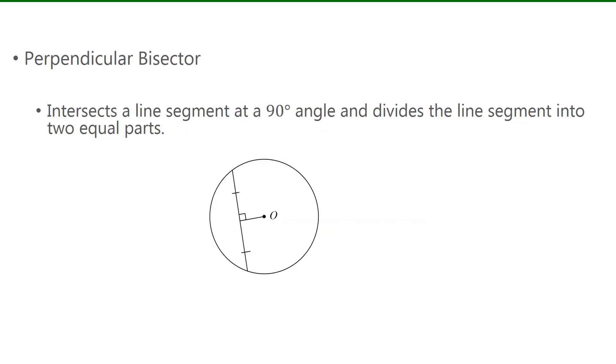Now a perpendicular bisector intersects a line segment at a 90 degree angle, and it divides a line segment into two equal parts. So if we have this line segment here, then this line segment here is called a perpendicular bisector, because they intersect at a 90 degree angle, and it cut the line segment into two equal parts.